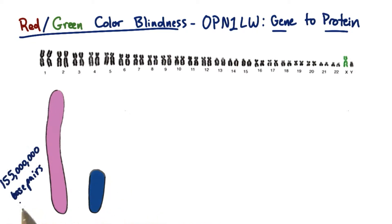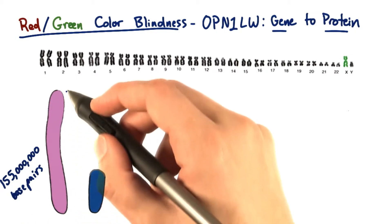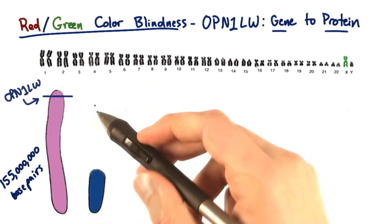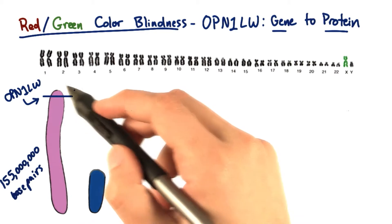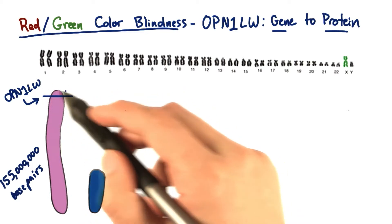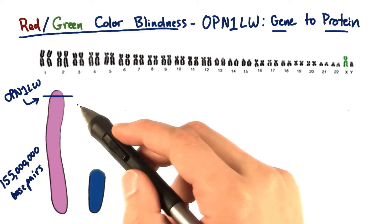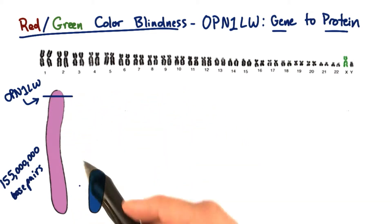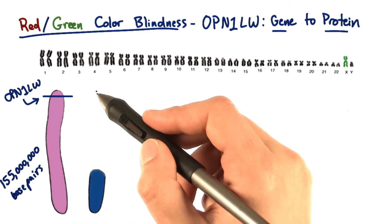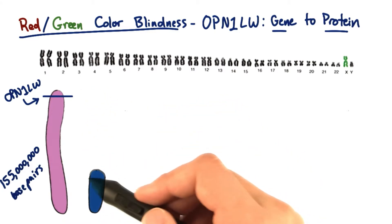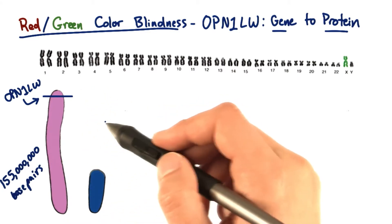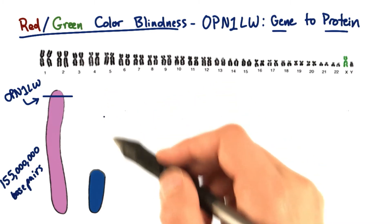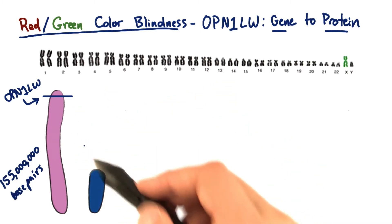The X chromosome is about 155 million base pairs from tip to tip. The OPN1LW gene is located right here, close to the end of the X chromosome. Notice that there's no corollary on the Y chromosome, because the Y chromosome is much smaller and doesn't have the same genetic information that the X does.